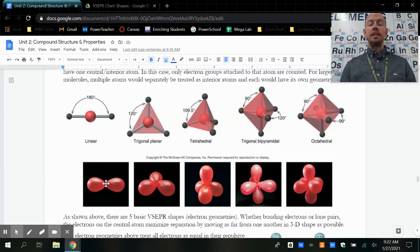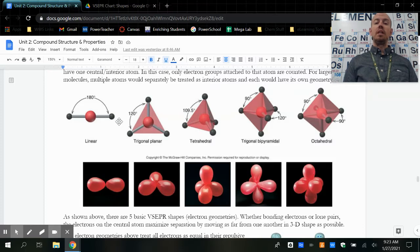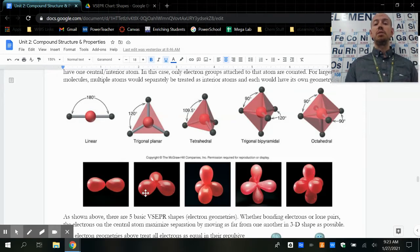If I've got a central atom with two things on it, there's some electrons here and some there - that's what these red balloons are representing, the electron clouds that want to be as far away from each other as possible. That makes my atoms line up in a straight line. If I have electrons in three places, it ends up spreading out in a triangle. It's still a flat triangle, and that's called trigonal planar.